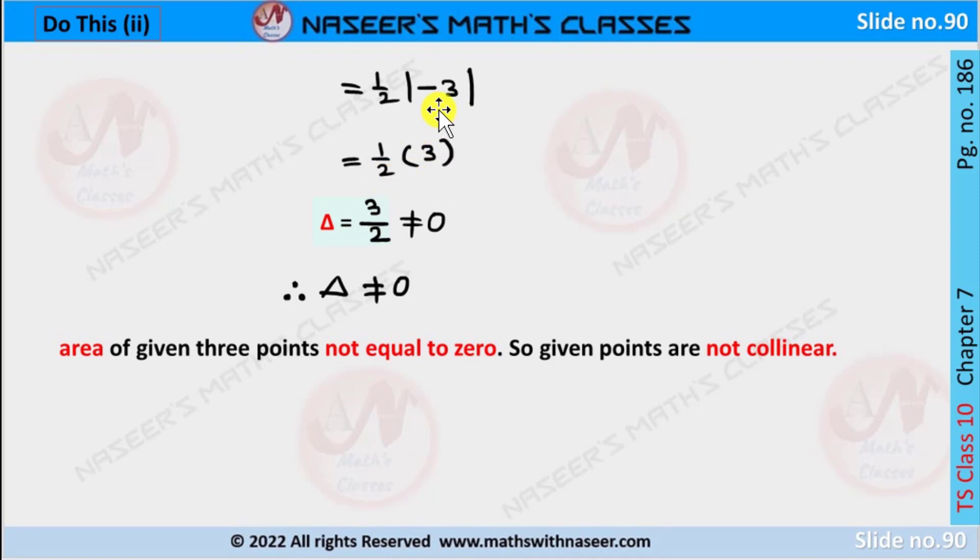Because modulus means we have to take only positive numbers, -3 is written as +3. So ½ into 3 is written as 3/2. Here this is not equal to 0, therefore Δ ≠ 0.